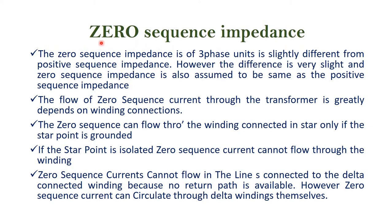Next I am going to explain the zero sequence impedance of the transformer. The zero sequence impedance of a three-phase unit is slightly different from positive sequence impedance. However, the difference is very slight and zero sequence impedance is also assumed to be the same as the positive sequence impedance. The flow of zero sequence current through the transformer greatly depends on winding connections.